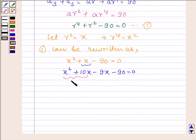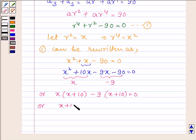Taking x common from the first two terms and minus 9 common from the last two terms, this can be written as x(x + 10) minus 9(x + 10) equals 0 or (x + 10)(x - 9) equals 0.